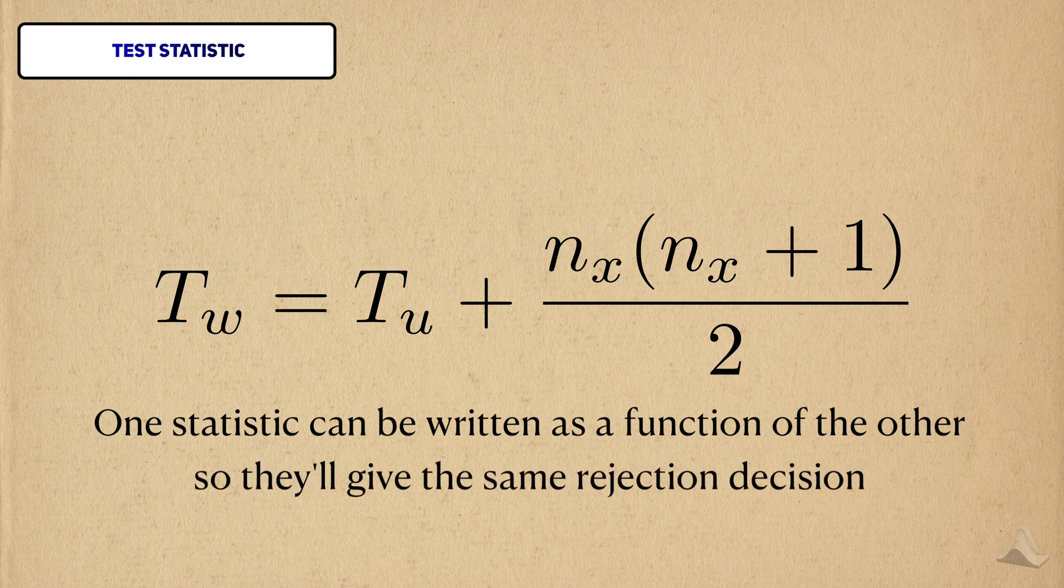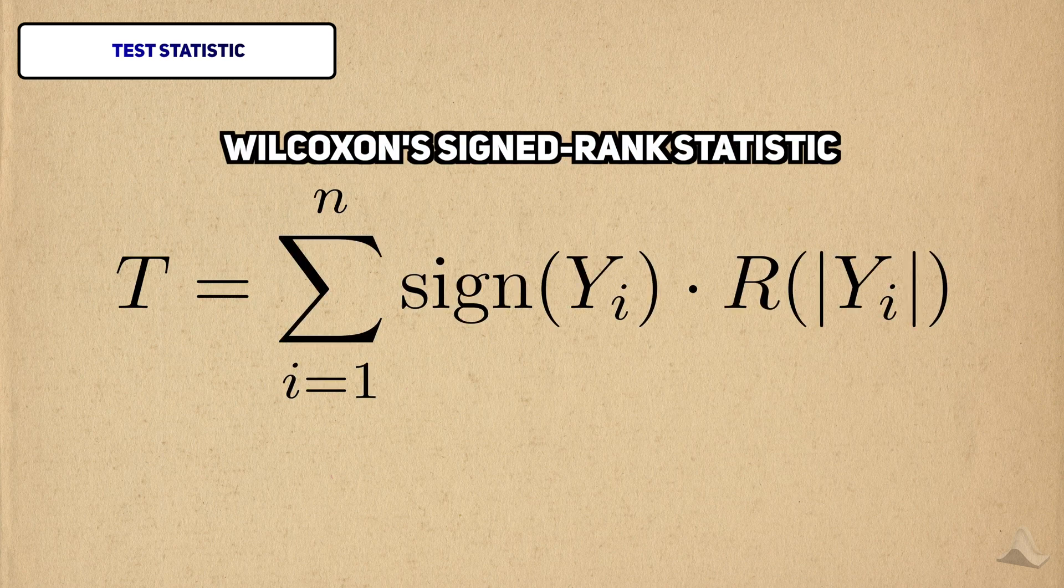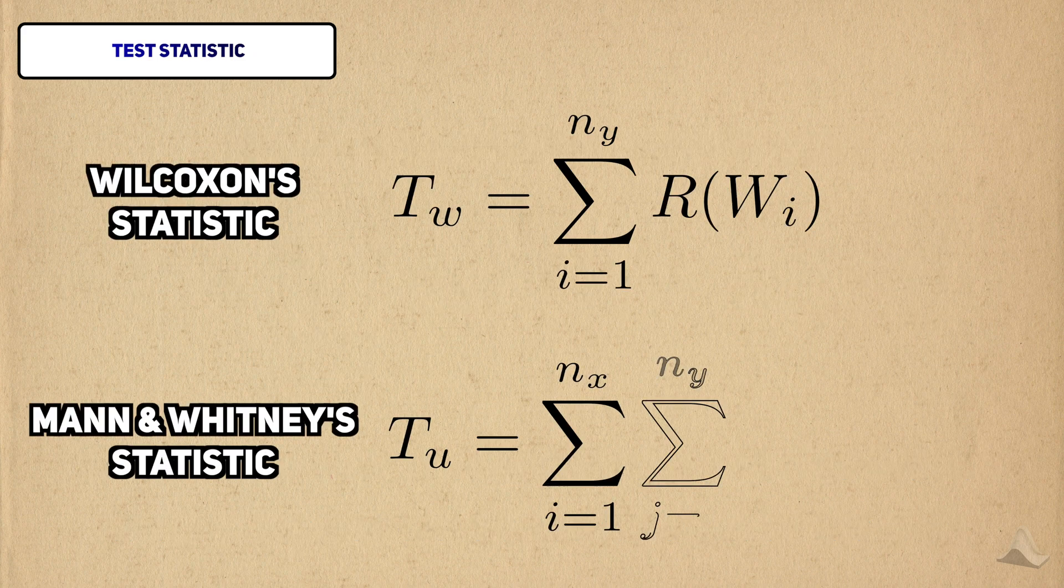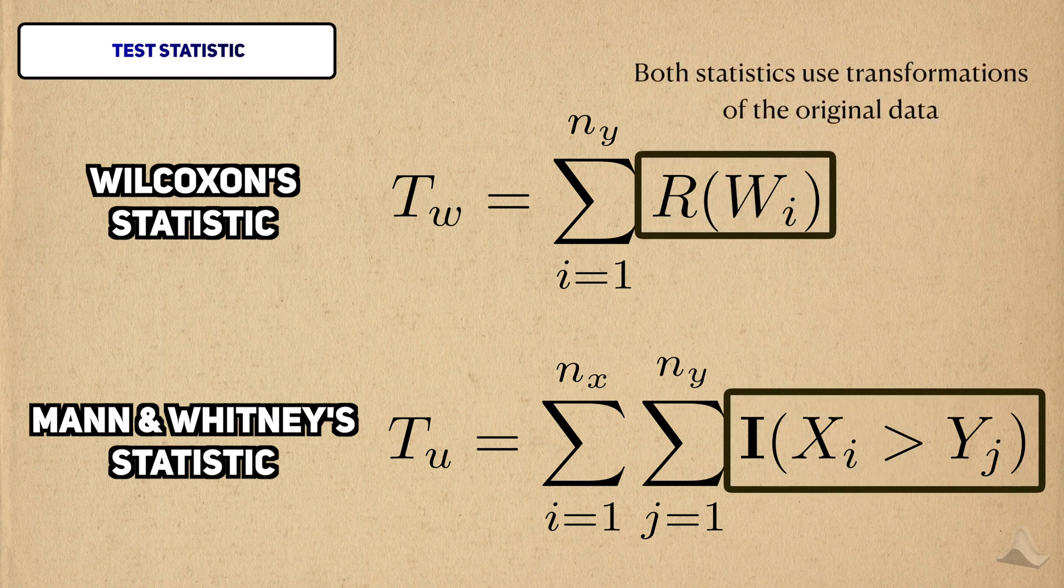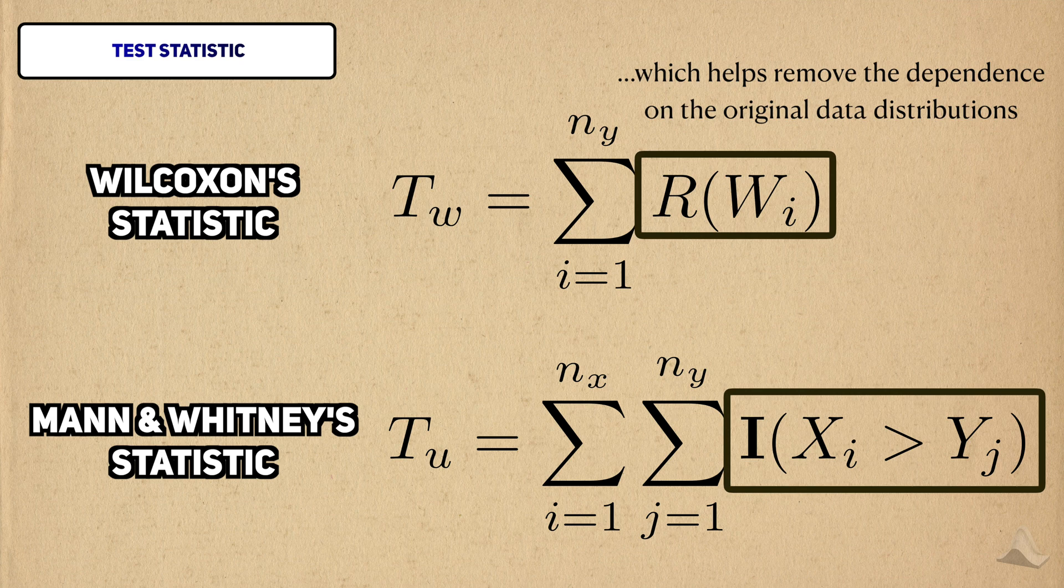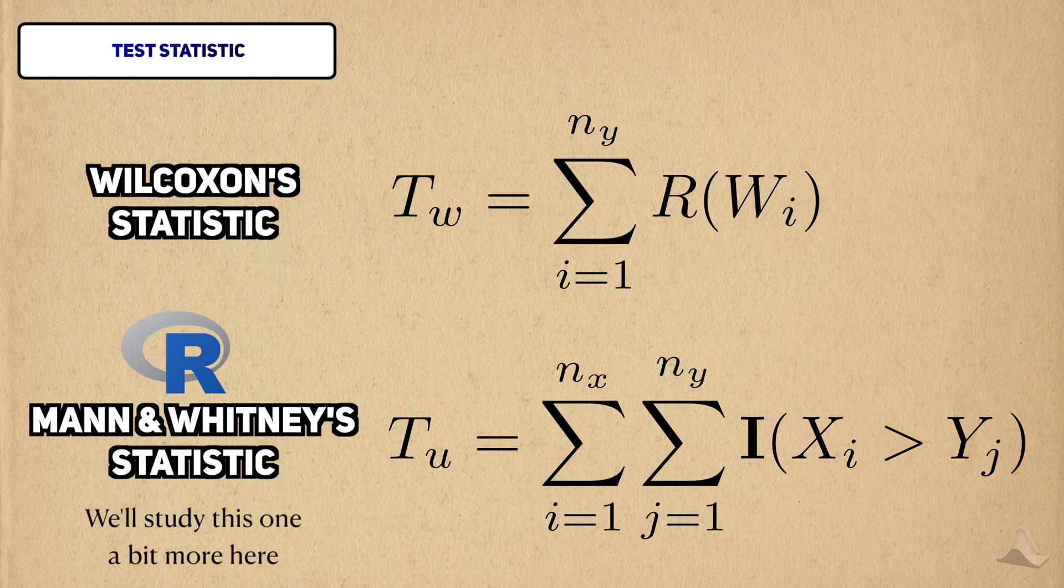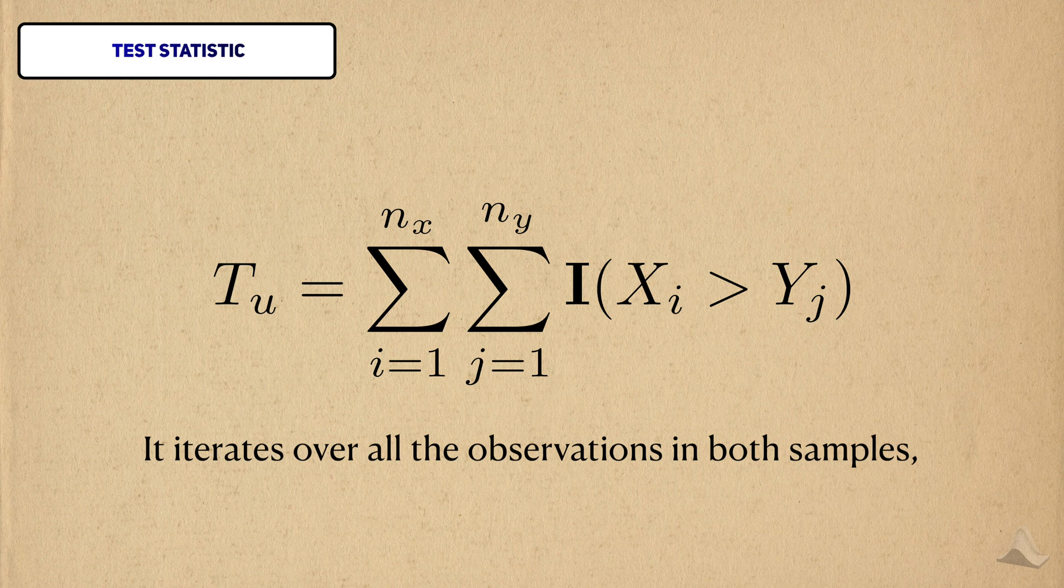In part one, we saw that the signed rank statistic was nonparametric because it's distribution-free. That is, its null distribution doesn't depend on the original distribution of the data. It's the same for both Wilcoxon and Mann-Whitney statistics. Both of them are based on transformations of the original data, which helps remove any dependence on the population distribution. In code, R conducts the test based on Mann and Whitney statistics, so we'll look at it a bit more.